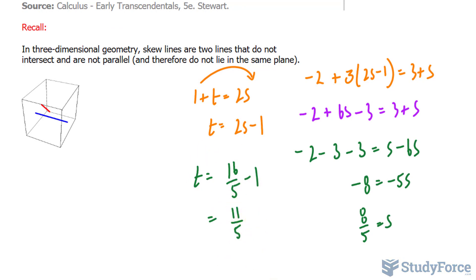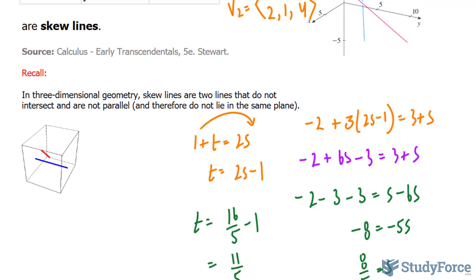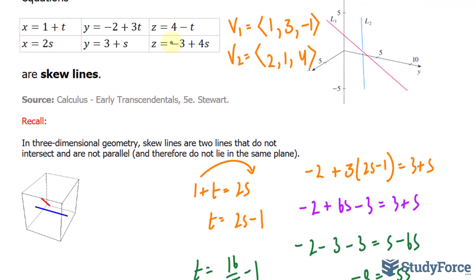Now, interestingly, if I take these two solutions and substitute them into 4 minus t equals minus 3 plus 4s, the left side and the right side will not equal each other. Therefore, there's no value of t and s that satisfies the three equations. That means the two lines do not intersect.